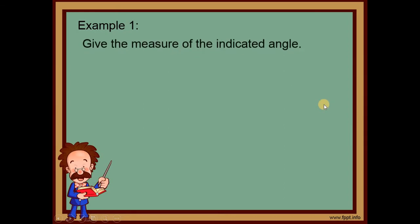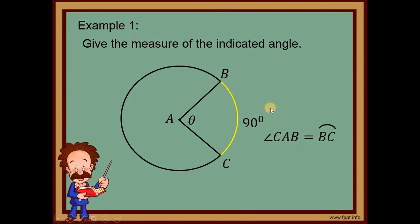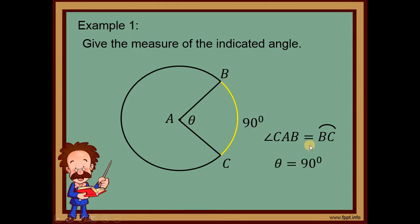Let's have an example. Number 1: give the measure of the indicated angle. Given that arc BC is equal to 90 degrees. By the central angle theorem, angle CAB — our theta — is equal to arc BC. Why are they equal? Because this is a central angle, and a central angle equals its intercepted arc. Therefore, theta — angle CAB — is equal to 90 degrees. And that's it.